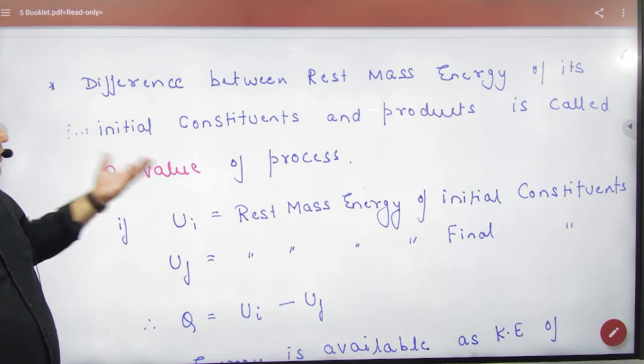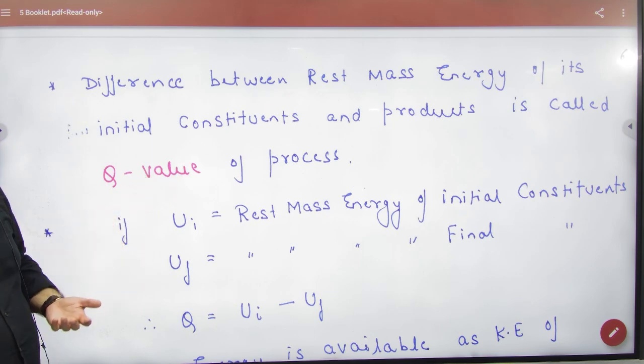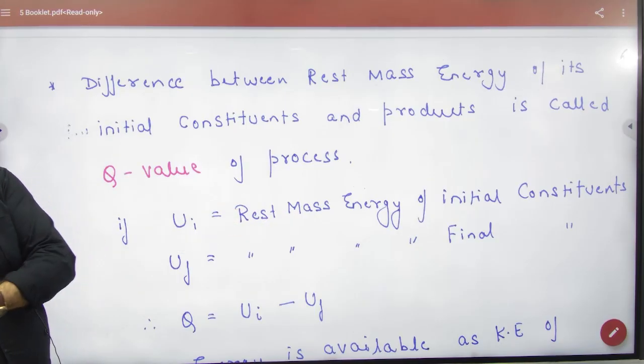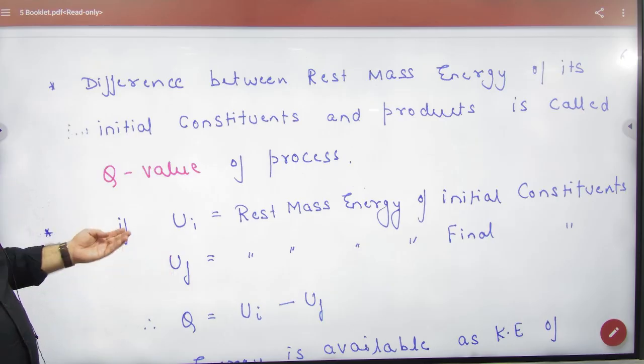So this difference of energy is the Q-value. Think of it this way: the rest mass energy means if your reactants convert their mass into energy, that energy is Ui.